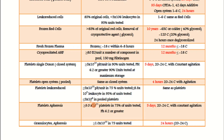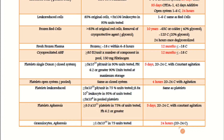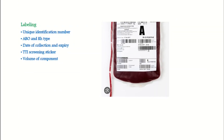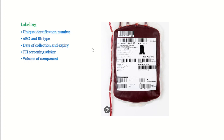For pooled platelets, leukocyte count must be less than 5.0 × 10⁸. For platelet apheresis, the platelet count should be more than 3.0 × 10¹¹ in 75% of units tested, with pH ≥6.2, expiry of 5 days, and storage at 20–24°C with constant agitation. For granulocyte apheresis, there should be a count of more than 1.0 × 10¹⁰ granulocytes in 75% of units tested, with an expiry of 24 hours and storage at 20–24°C.